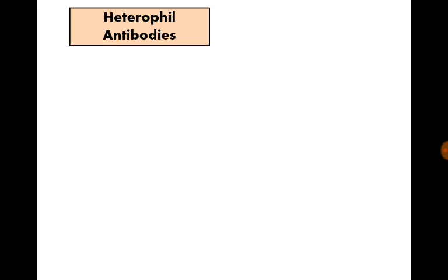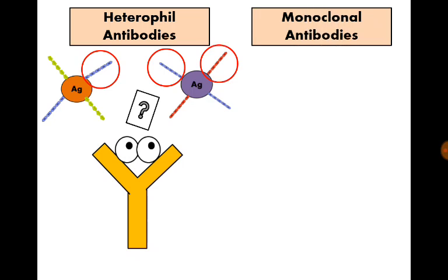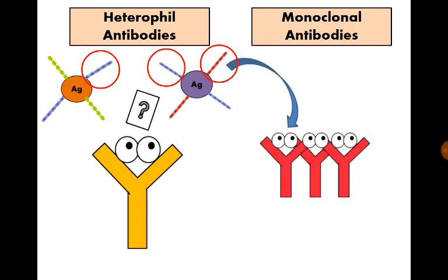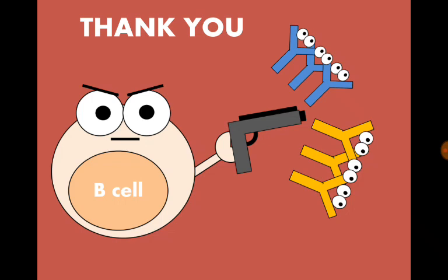Before we come to an end, what are heterophile antibodies? The antibodies that cross-react with antigens different than their specific antigens, and this occurs due to sharing similar epitopes. What are monoclonal antibodies? Monoclonal antibodies are a clone of antibodies synthesized in labs against certain specific antigens to be used in diagnostic or therapeutic purposes. So, thank you for watching us, wait for the complement system video, and goodbye!